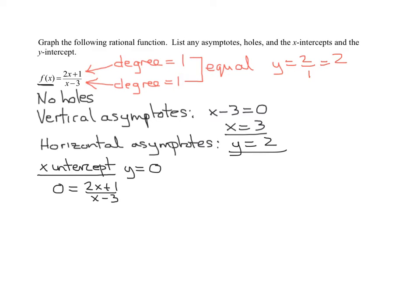When is a fraction equal to 0? When the numerator equals 0. So let's solve this. Subtract 1 from both sides. Divide both sides by 2. So I get x equals negative 1 half. And what is that as an ordered pair? It is negative 1 half, 0. That is my x-intercept.